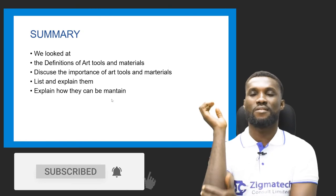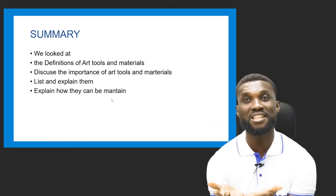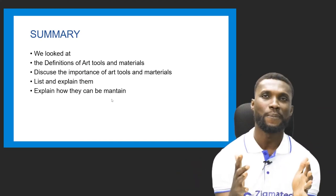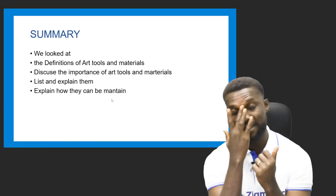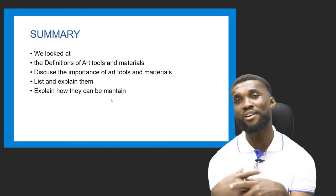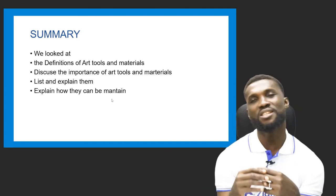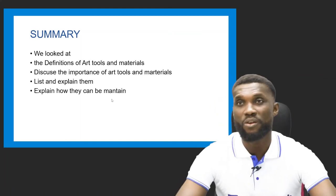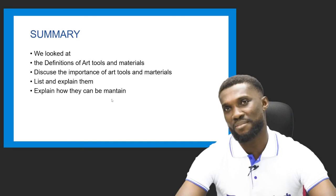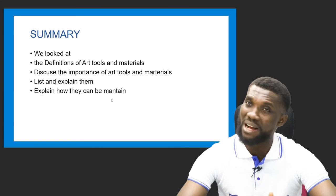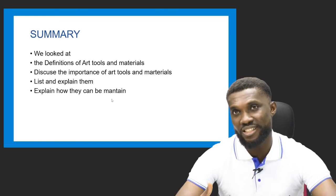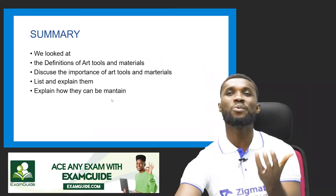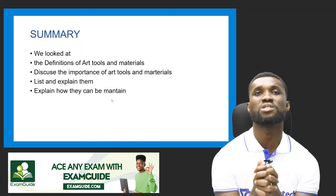I guess that's how much we can take for this topic — there are a lot of tools and materials and we can't exhaust them all. You can go read the other ones and familiarize yourself with them. These are the major ones you need as a painter, ceramics artist, or artist in general — your pencil, biro, brush, eraser, and more. In summary: we looked at the definition of art tools and materials; we discussed the importance of art tools; we listed and explained some of the tools; we talked about how they can be improvised; and we explained how to maintain each one.